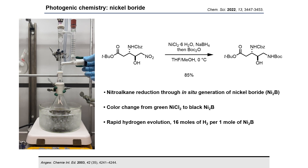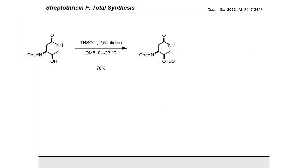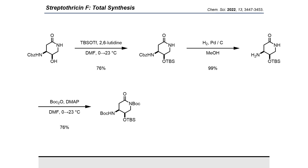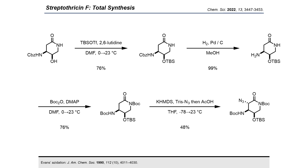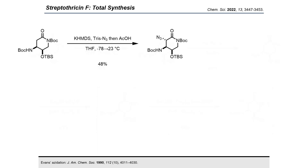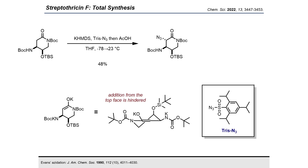Back to business: with our diastereomerically pure lactam in hand, silylation with TBS triflate followed by hydrogenation and subsequent Boc protection produced our bis-Boc lactam. It was key to swap the Cbz group for Boc groups to allow for orthogonality of protecting groups once our fragments are coupled together. Treatment of this bis-Boc lactam with KHMDS and trisyl azide provided our alpha-azidolactam as a single diastereomer. We believe the complete selectivity of this reaction is directed through synergistic effects of a congested top face of our enolate and the bulky nature of trisyl azide, with a moderate yield observed as a consequence of enolate formation and substrate stability.